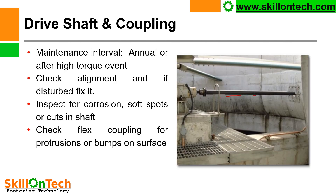Here you can see the drive shaft, coupling, and gearbox. Maintenance interval is generally annually or after a high torque event. Check alignment, and if disturbed, fix it. If any misalignment is found, the vibration level of the motor will increase, so we should check the alignment of the motor with the gearbox and maintain it. Inspect for corrosion, soft spots, or cuts in the shaft. If the drive shaft or coupling is found damaged, they shall be replaced.